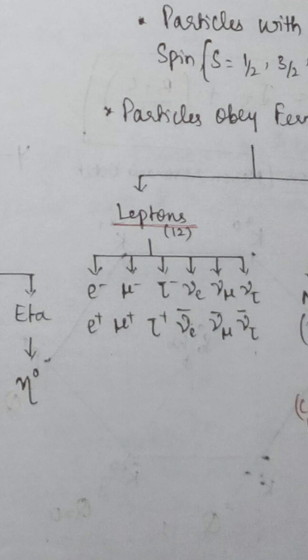The antiparticles are: anti-electron (positron), anti-electron neutrino, anti-muon neutrino, and anti-tau neutrino. So the 12 leptons are: electron, muon, tau; electron neutrino, muon neutrino, tau neutrino; and their six corresponding antiparticles. This completes the leptons classification.